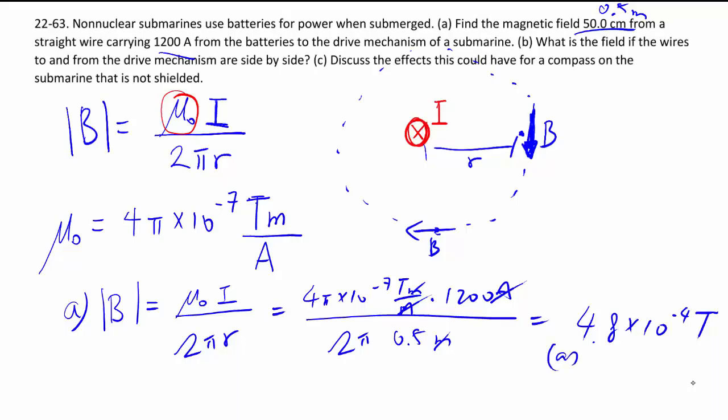And you'll notice, compared to Earth, skipping over to part C already, the field of the Earth is roughly 5 times 10 to the minus 5 Tesla in most places on Earth, so this is about 10 times the magnetic field of the Earth.